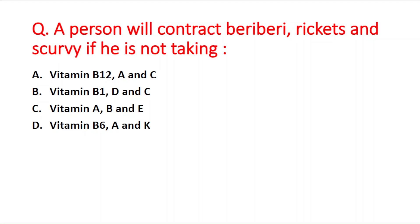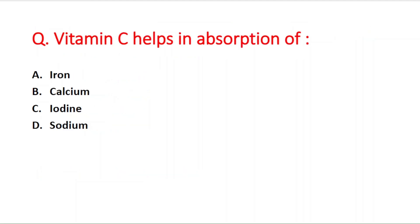The right answer is option B — deficiency of vitamin B1, D, and C. Vitamin B1 deficiency causes beriberi, vitamin D deficiency causes rickets and bone disease, and vitamin C deficiency causes scurvy. Next question: vitamin C helps in absorption of — option A iron, B calcium, C iodine, D sodium. The right answer is option A — iron.